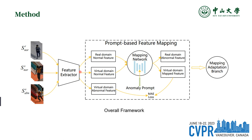Here is the overall framework. The framework contains three inputs: normal and abnormal instances from the virtual dataset, and normal instances from the real dataset. First, a feature extractor is used to extract the features for each instance. Then, a mapping network is used to map the normal instance to an abnormal one. Because we know the abnormal distribution in the virtual domain, the mapping network can be well trained by minimizing the distance between generated virtual anomalies and true virtual anomalies.